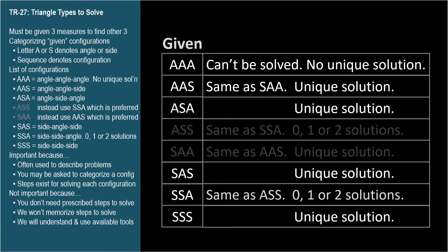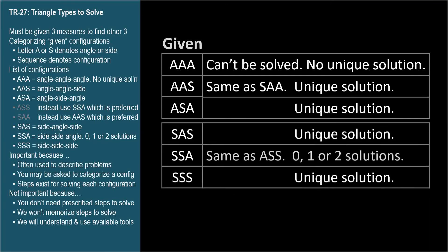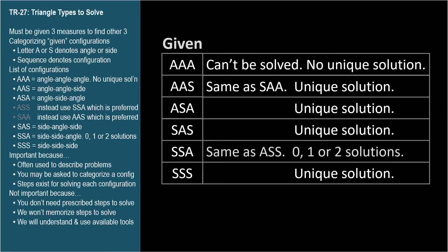These configurations that have unique solutions can be used to prove two triangles are congruent. For example, if we can determine that two triangles have the same side-angle-side measurements, then we've indirectly proven that they're congruent because each one will have a unique solution which must be equal to the other. Using these configurations to prove two triangles to be congruent is a geometry topic, not a trig topic, so I'm not going to go into detail.